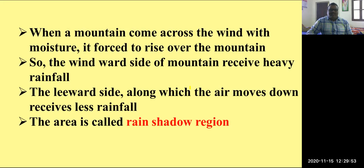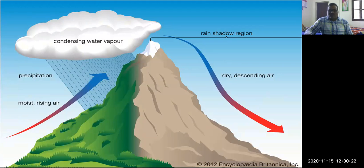After crossing the mountain, the winds lack moisture. So the leeward side of the mountains gets less rainfall or sometimes no rainfall at all. The area on the leeward side is called as the rain shadow region.